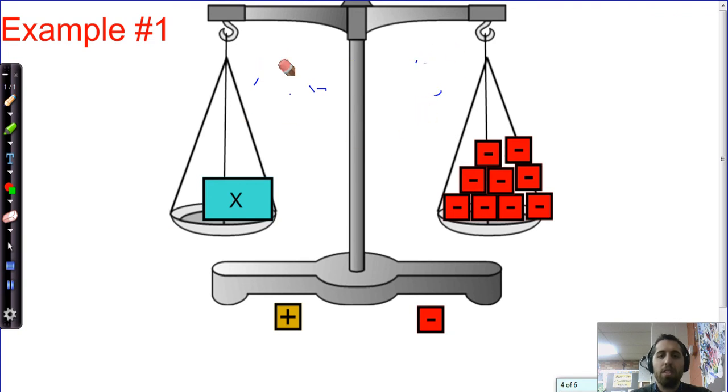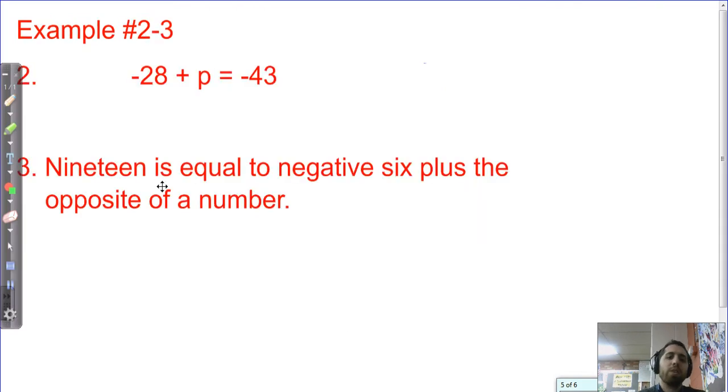We're going to move on to some regular examples without pictures. For these next ones, you don't have to draw pictures. First one says negative 28 plus p equals negative 43. I'm just going to follow the same steps. Step number one is draw the scales of justice. Step number two is locate the variable. Locate the variable. It is p, so I found it. Now that I know that p is on the same side as negative 28, I can isolate the variable by undoing what's been done. Negative 28 has been added, so I can subtract negative 28. If I take away negative 28, then I'm really just adding positive 28.